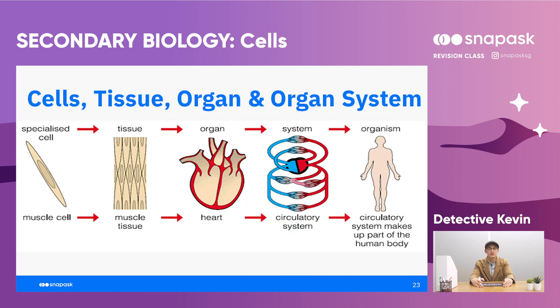Let's take a look at another example: the circulatory system. It starts off with a muscle cell, which is a specialised cell. All these muscle cells associate together to form muscle tissue, which makes up the heart — an organ. The heart, along with other organs, makes up the circulatory system. And that's it for cells. I'll catch you in the next video series. See you then.